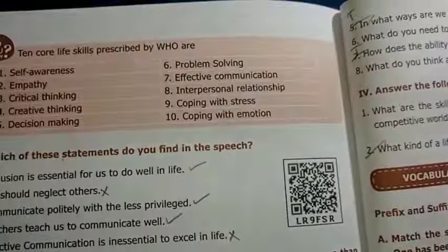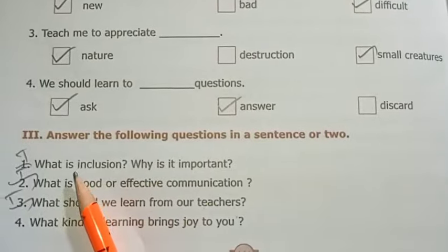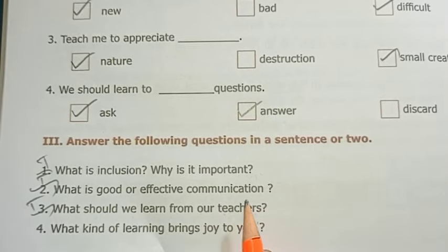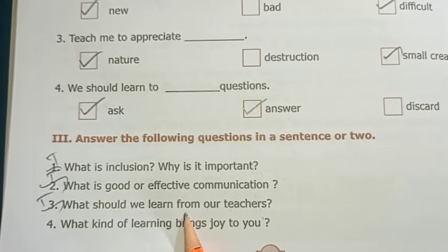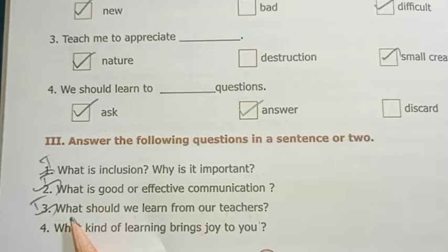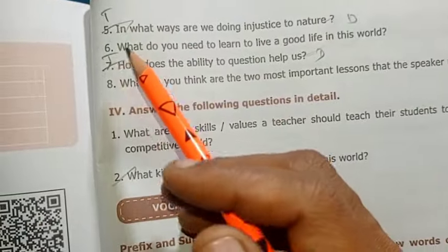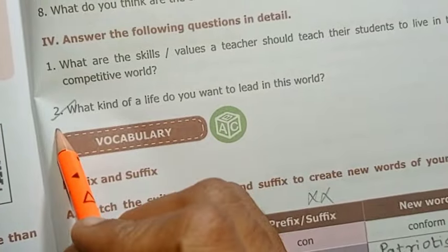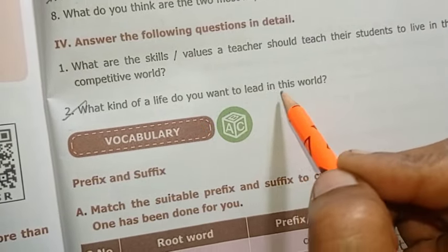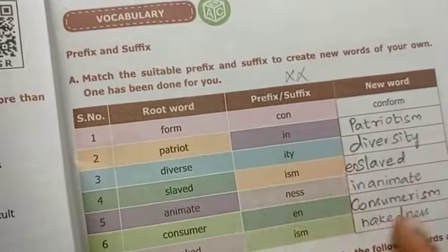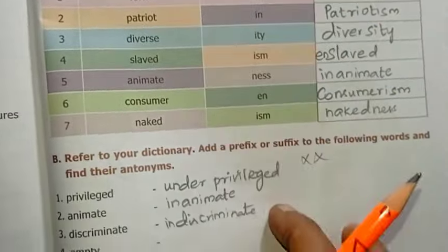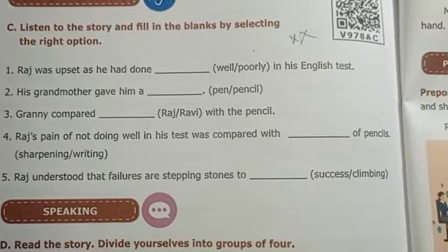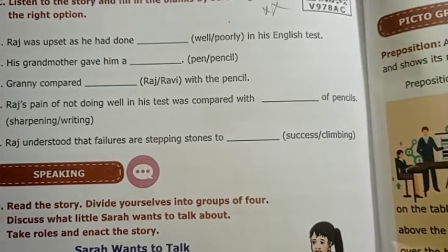Identify the speaker. Prose 3: A Prayer to the Teacher. Model question uploaded as reference. Page number 144, answer the following questions: what is inclusion? Why is it important? What is good or effective communication? What should we learn from our teachers? First, second, third important. Page number 145, fifth, sixth, and seventh — third question important. Paragraph: what kind of life do you want to lead in this world? Important.